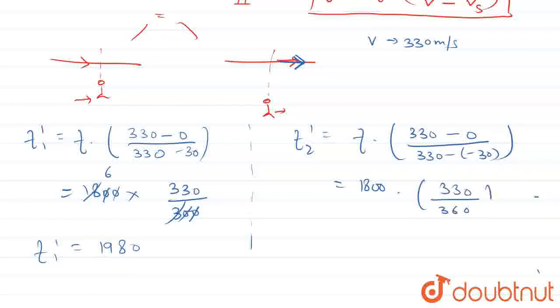Is equal to 1800 into 330 divided by 360. 0s cancel, this goes to 6, 6 into 30 again 6 into 1 gives 5, is equal to 1650 f2 dash.